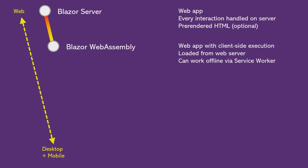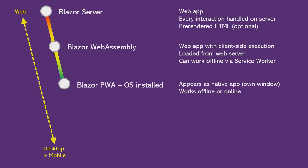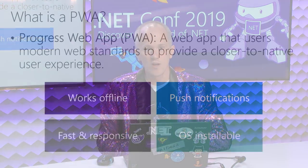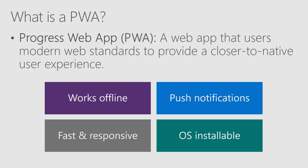That's Blazor WebAssembly. Now, we can use more modern web standards to make it even more native-like — apps like this are typically called Progressive Web Apps, or PWAs. A PWA is just a web app that uses modern web standards to enable things like offline support. You add a service worker so that files can be cached and used even when the browser is not connected. PWAs also support push notifications, are fast and responsive, and on some platforms they can even be OS-installable — you can pin them to your home screen on your phone, or on Windows 10 install them to run from the start menu.